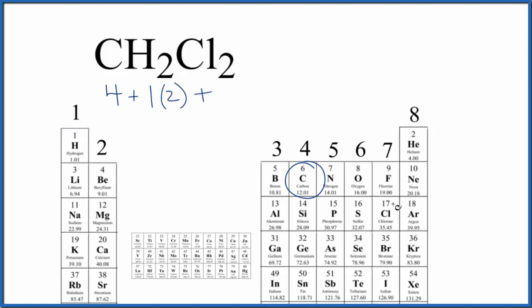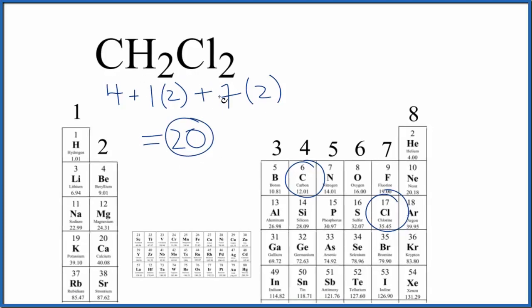And then for chlorine, over here in 17, sometimes called group 7A, that has seven valence electrons. We have two of those. So we have four plus two is six plus 14, 20 total valence electrons for the CH2Cl2 Lewis structure.